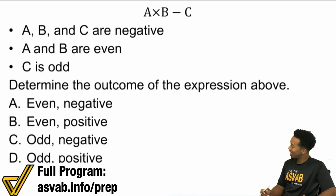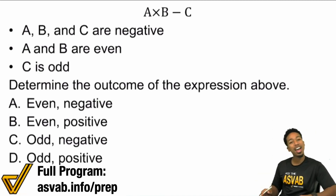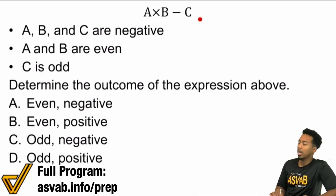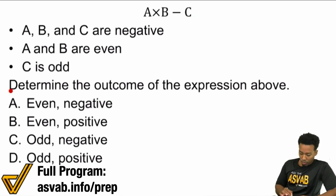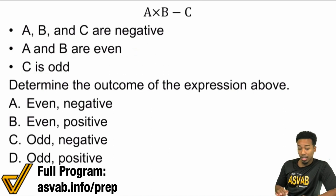But enough about that. Let's go ahead and ace the ASVAB. Let's get to it. So what we have here is A times B minus C. That's pretty random, right? But what we're looking for is we want to determine the outcome of the expression above. What we see is that A, B, and C are negative. A and B are even, and C is odd.